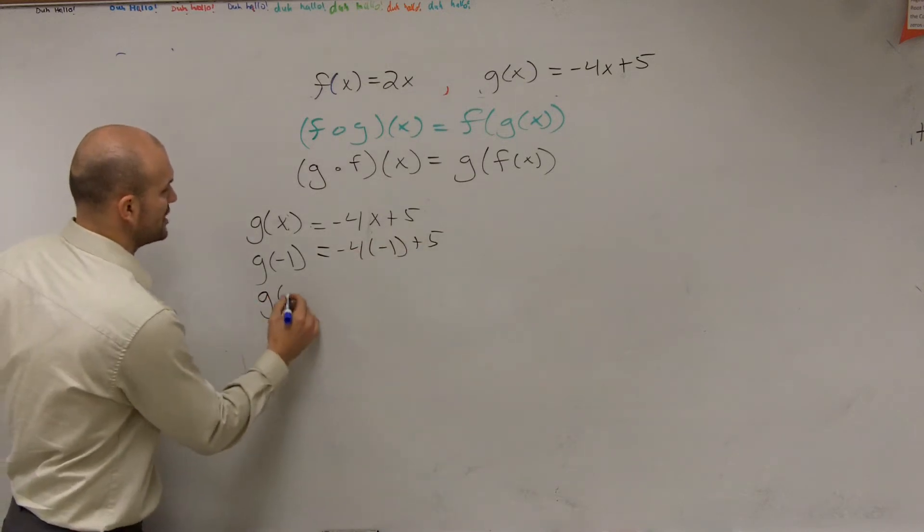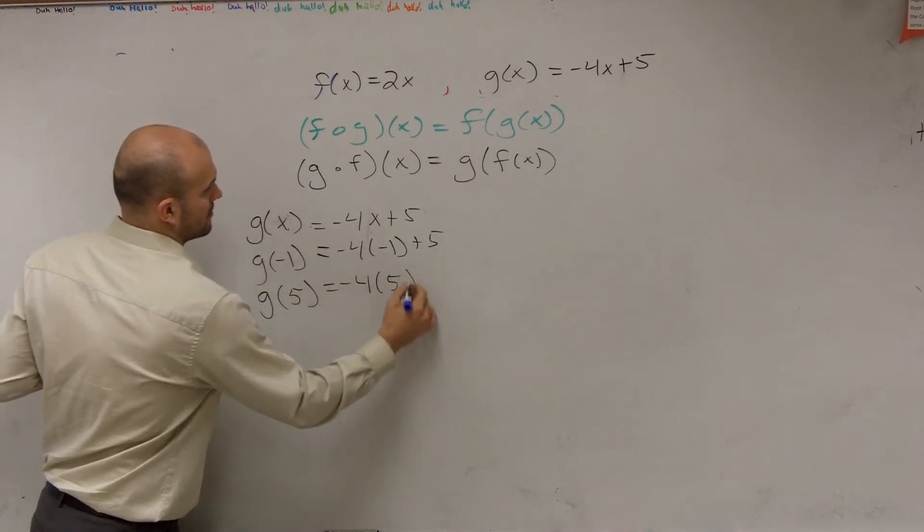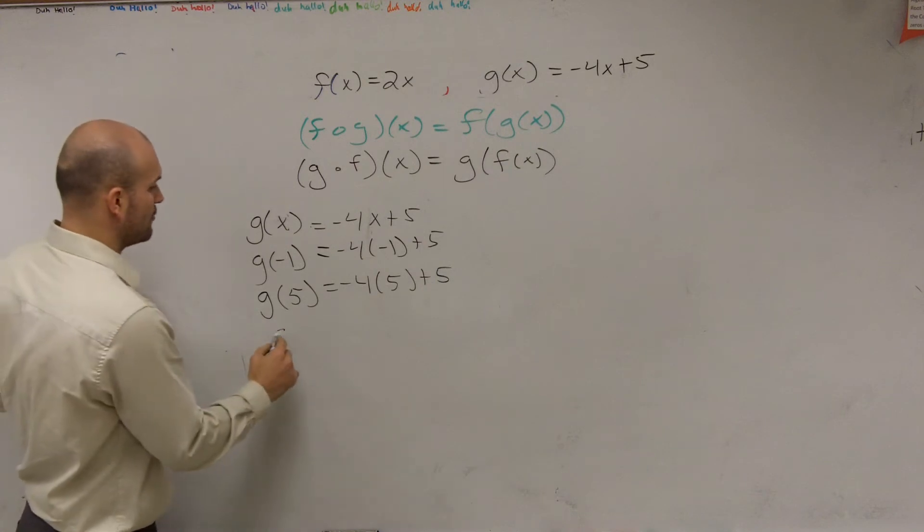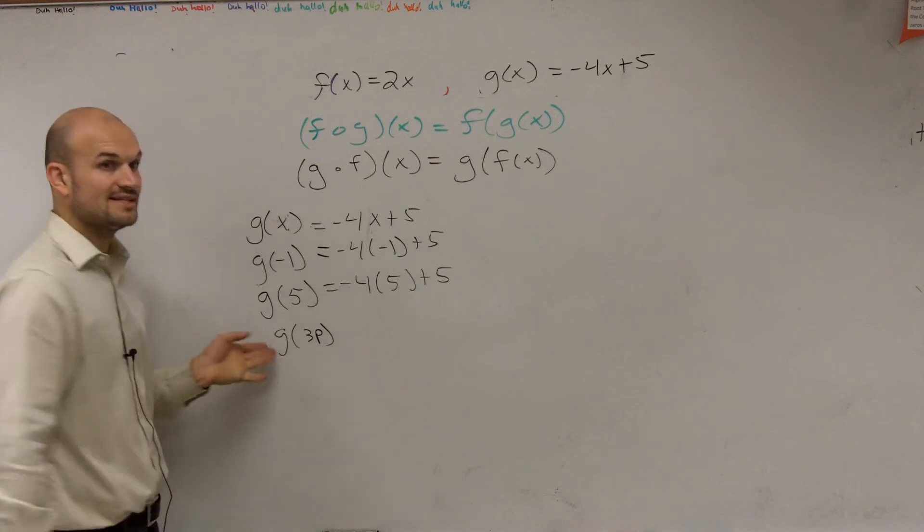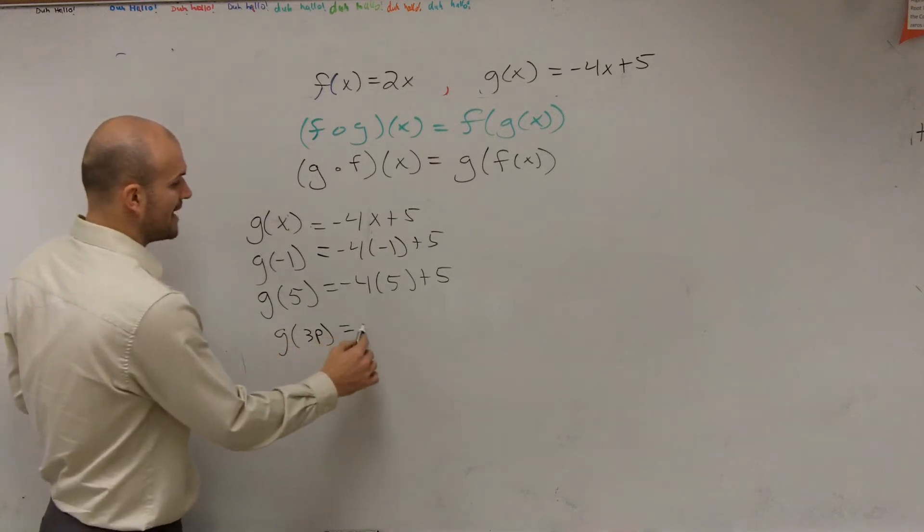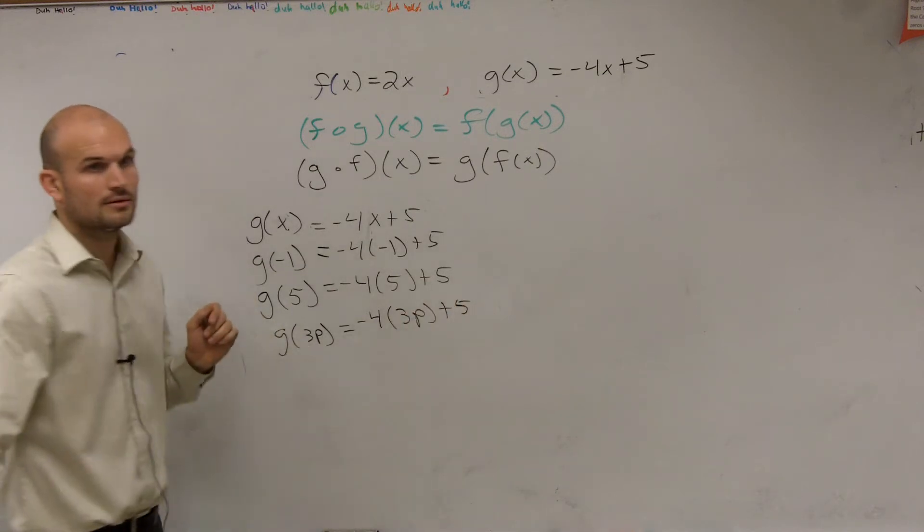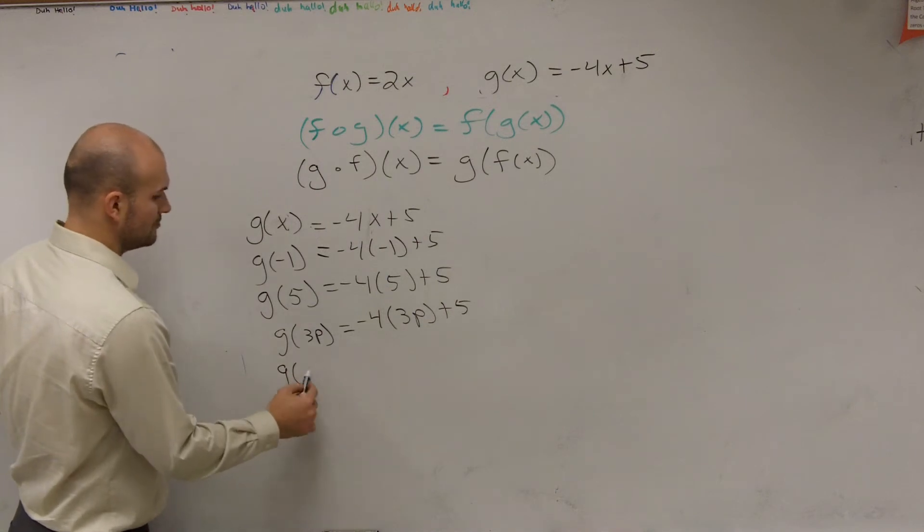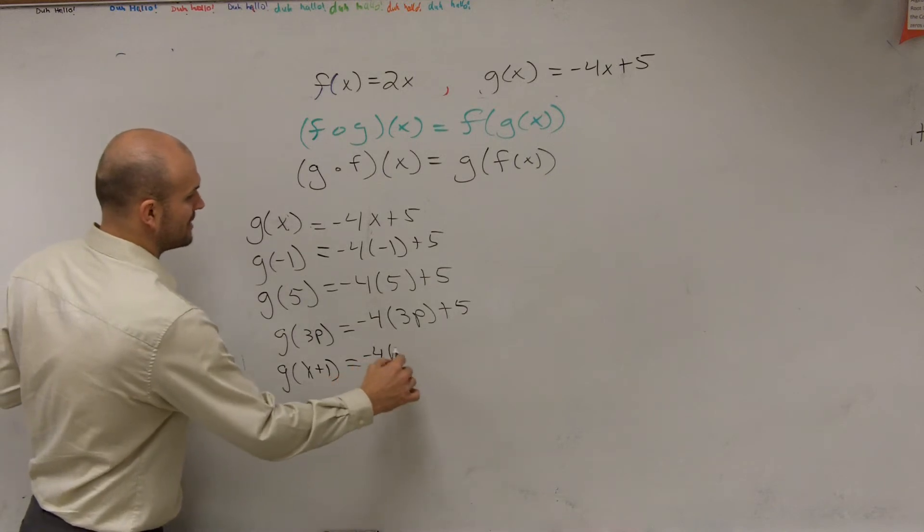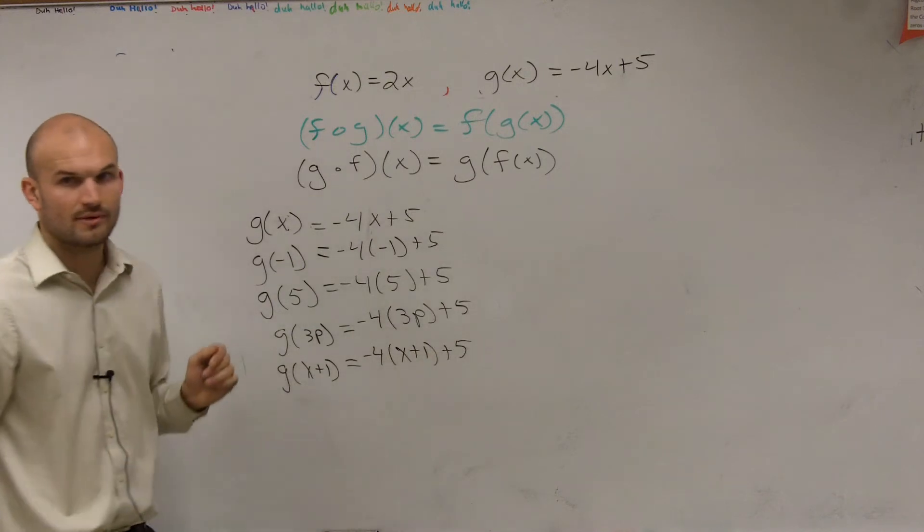If I say what is g of 5, then you put a 5 in for the x. Right? If I say what is g of 3p, then you plug in a 3p in for the x. Does everybody follow me so far? If I say what is g of x plus 1, then you plug in an x plus 1 in for the x. And then you'd evaluate. Right?